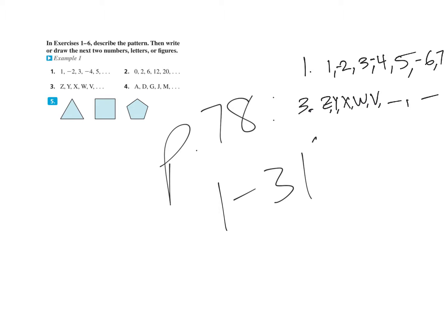On number five, you have a three-sided figure, a four-sided figure, a five-sided figure. So you're going to draw a six-sided figure and then a seven-sided figure — counting up to seven sides. All right, next page.